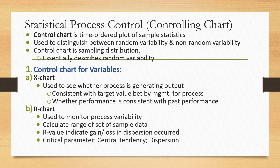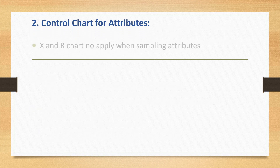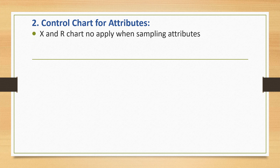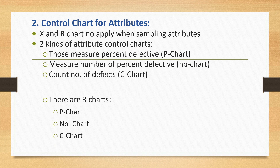The R chart is used to monitor process variability — it calculates the range of a set of sample data. The R value indicates the gain or loss in dispersion and is a critical parameter for central tendency and dispersion. For control charts for attributes, the X-bar and R charts do not apply when sampling attributes. There are two types of attribute control charts: those that measure the percent defective (P chart and NP chart) and those that count the number of defects (C chart).